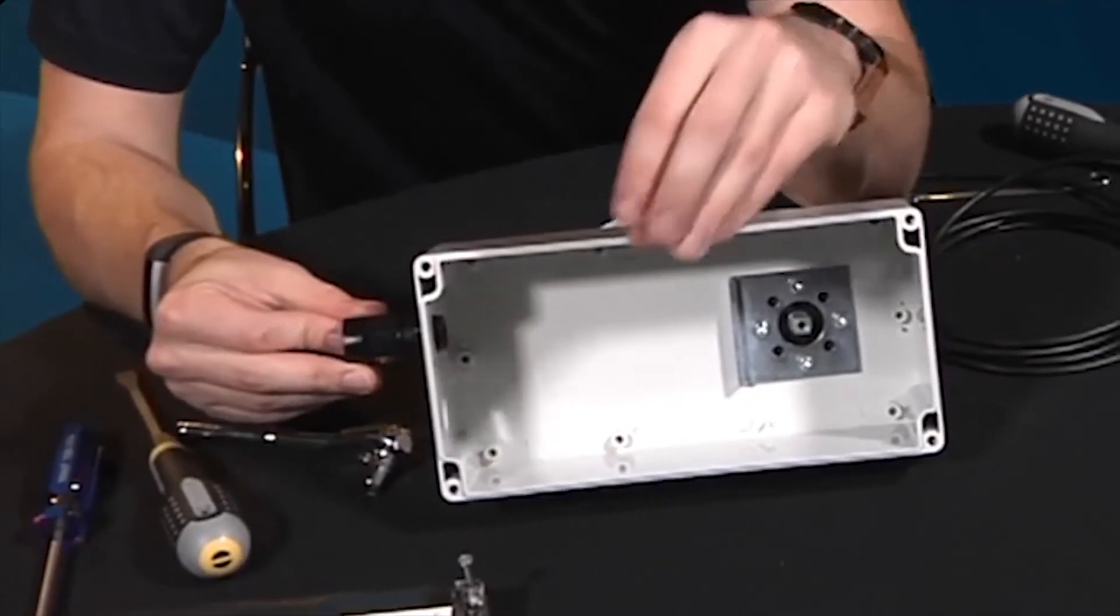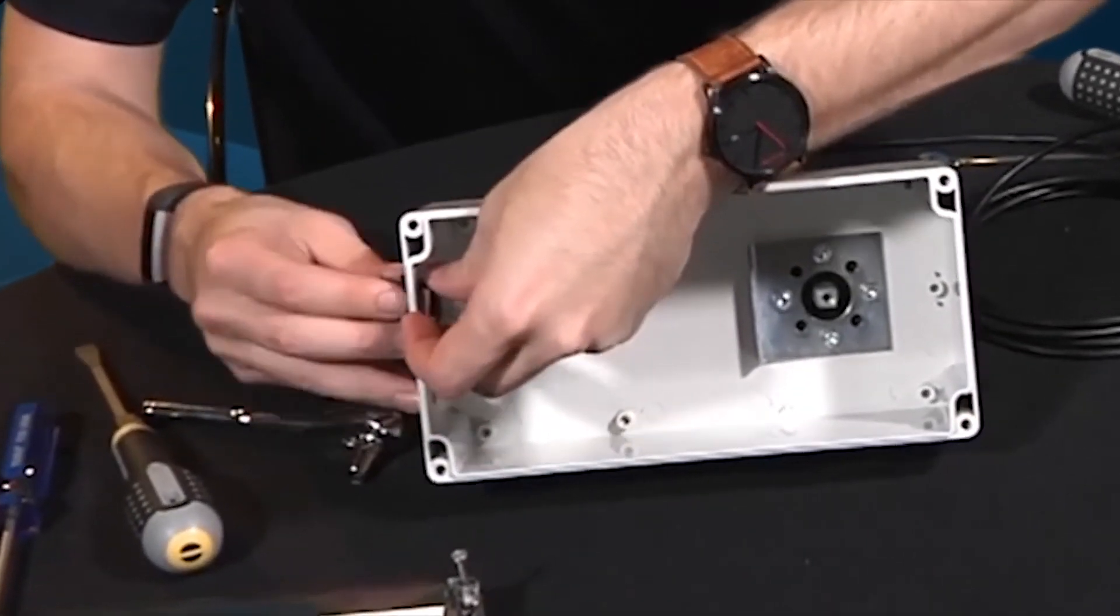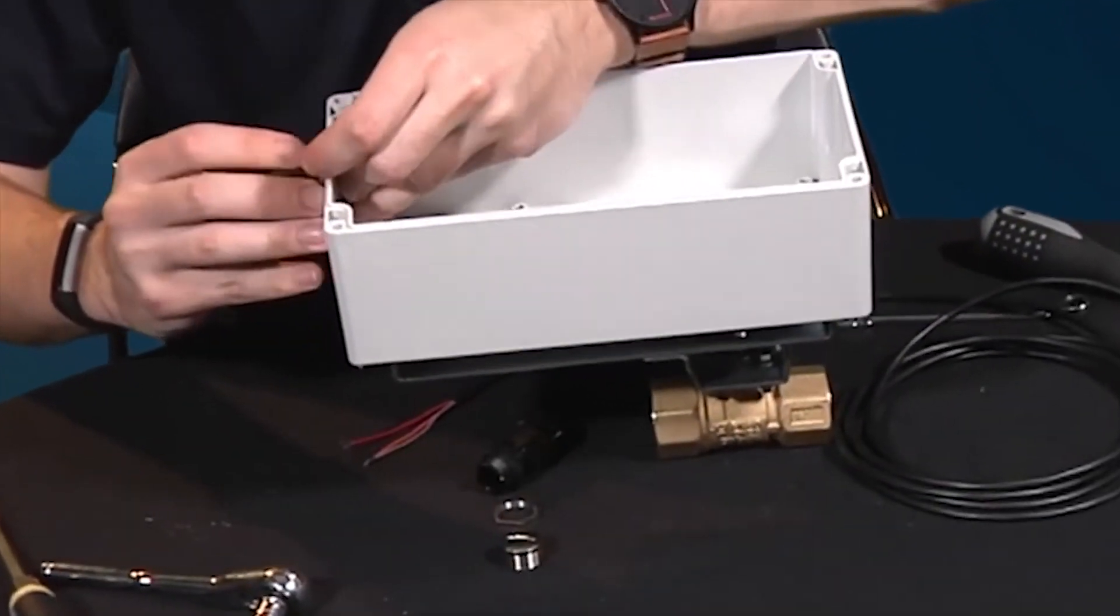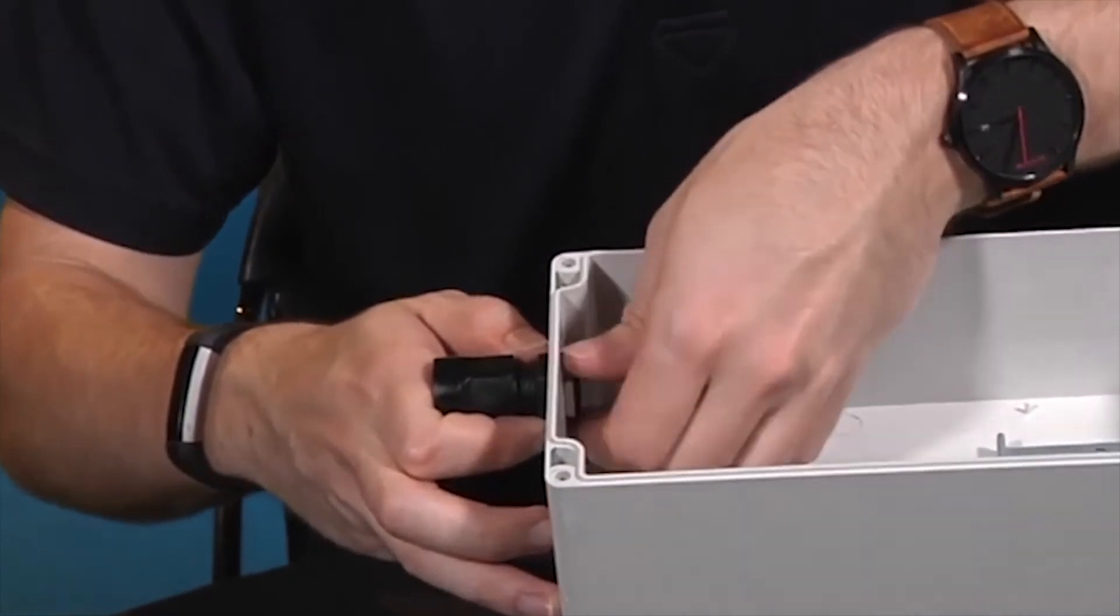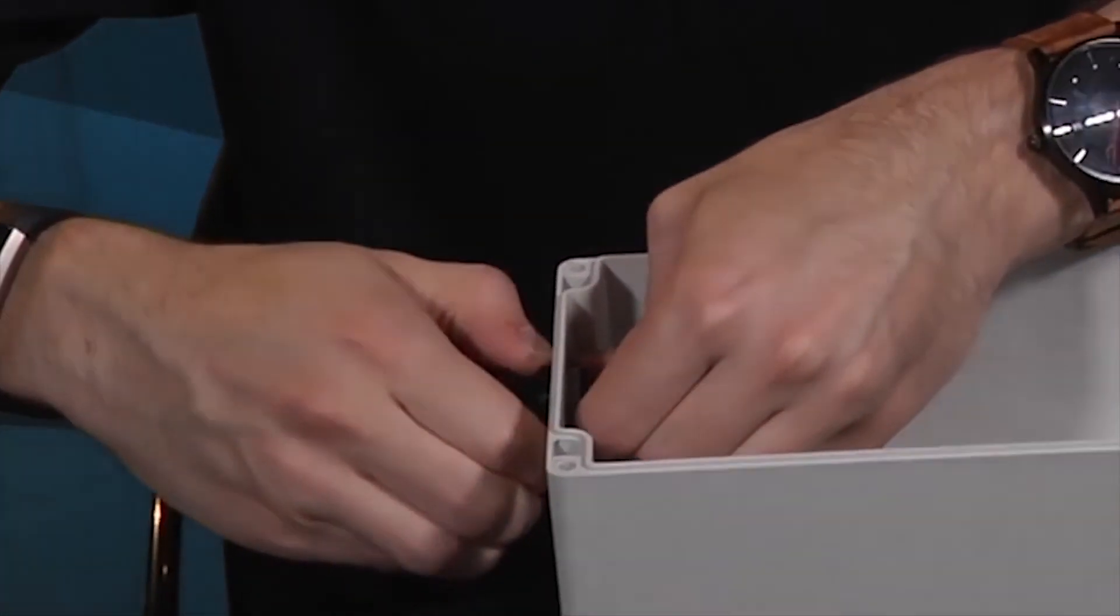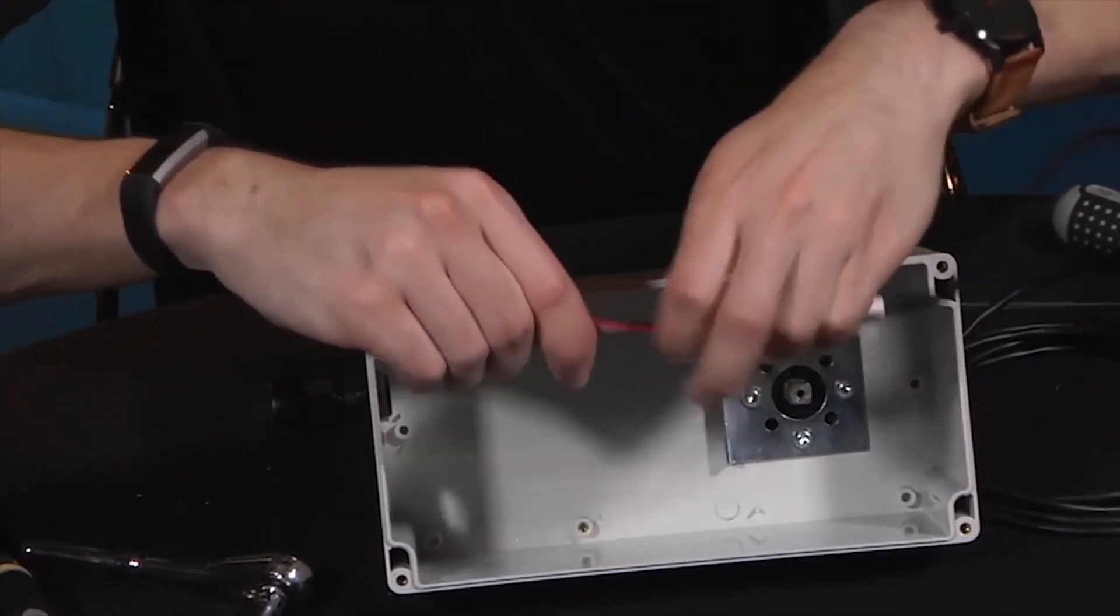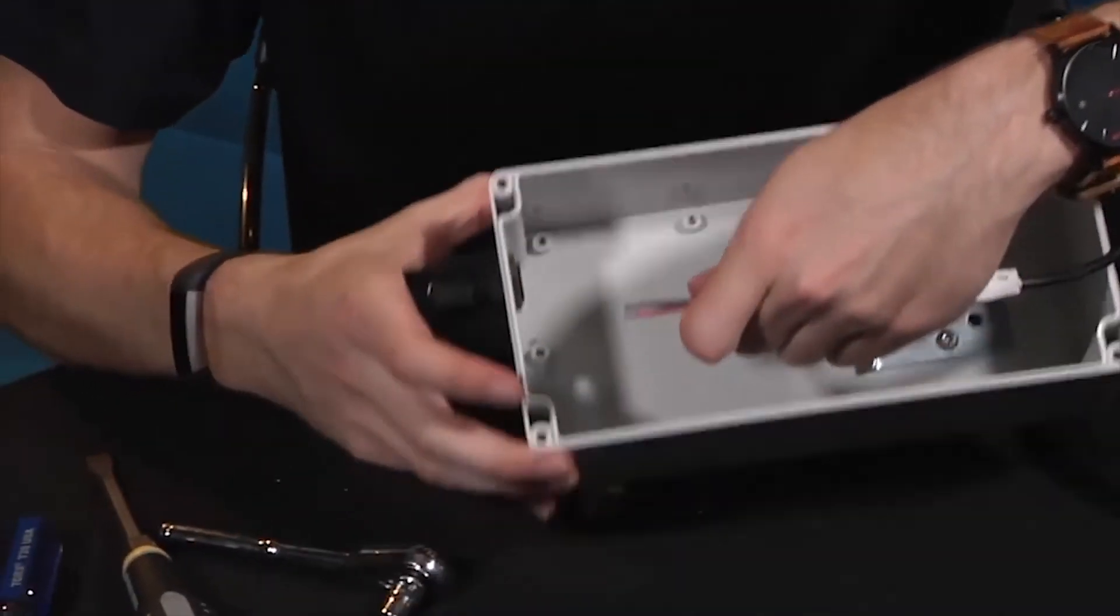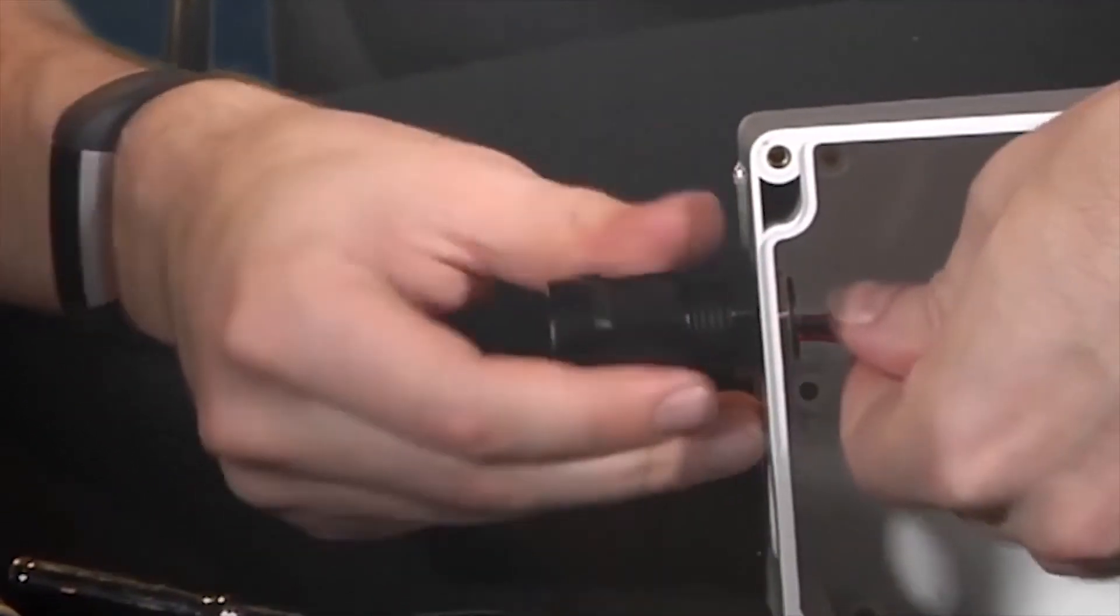Next, we're going to secure the strain relief conduit adapters. Simply insert the conduit adapter into the left side hole and tighten the nut on the threads from inside the enclosure. Make sure that it is a snug fit. Feed the electrical cables through the strain relief conduit adapter. Loosen the adapter to make feeding the cable through easier.